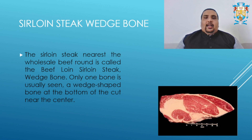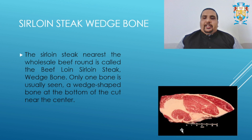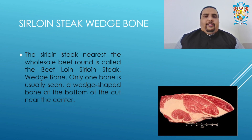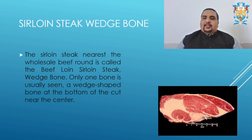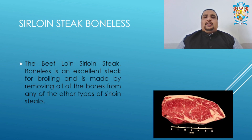Next we head on to the sirloin steak wedge bone. As you can see in the image, there is a small wedge bone in the steak. The wholesale beef round is called the beef loin sirloin steak wedge bone. Only one bone is usually seen — a wedge-shaped bone at the bottom of the cut, near the center.